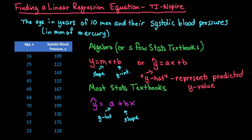In order to create or find a linear regression equation, you do have to have bivariate data, which means that you have two variables. In this case, what we have is the age in years of 10 men and their systolic blood pressures in millimeters of mercury. So in this case, we're going to say that age is our x or our explanatory variable. It explains the outcome or the response, the systolic blood pressure. So this is called the response variable, where age is called the explanatory variable.